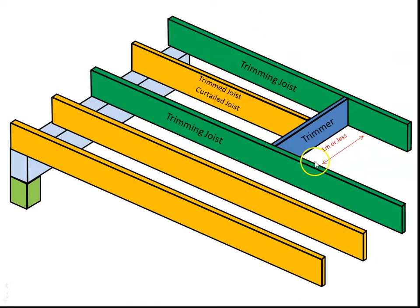You'll notice these three terms are very similar to each other: trimmer, trimming joist, and trimmed joist. It would be nice if they were different from each other, but it's important to understand which one you are talking about because the size of these comes out of the AS1684 which we will go through in a minute.